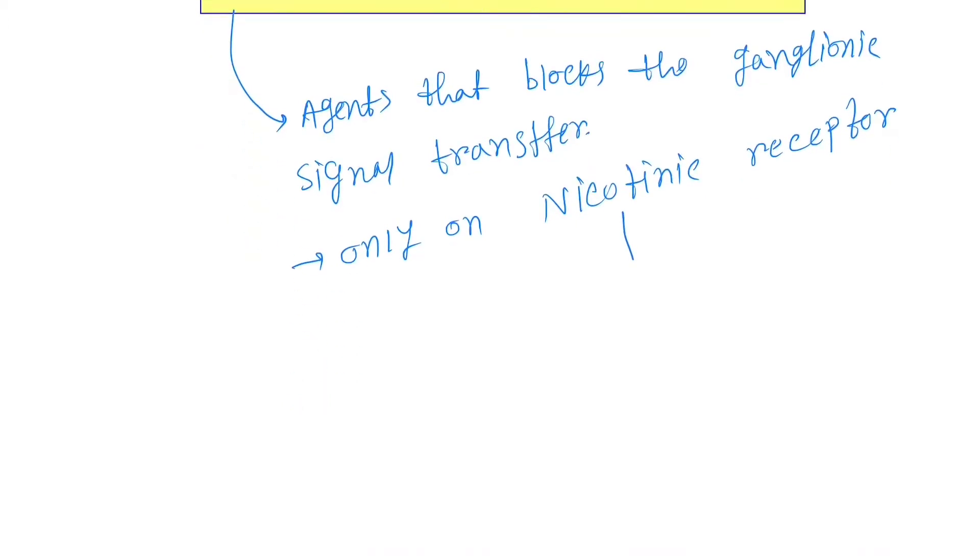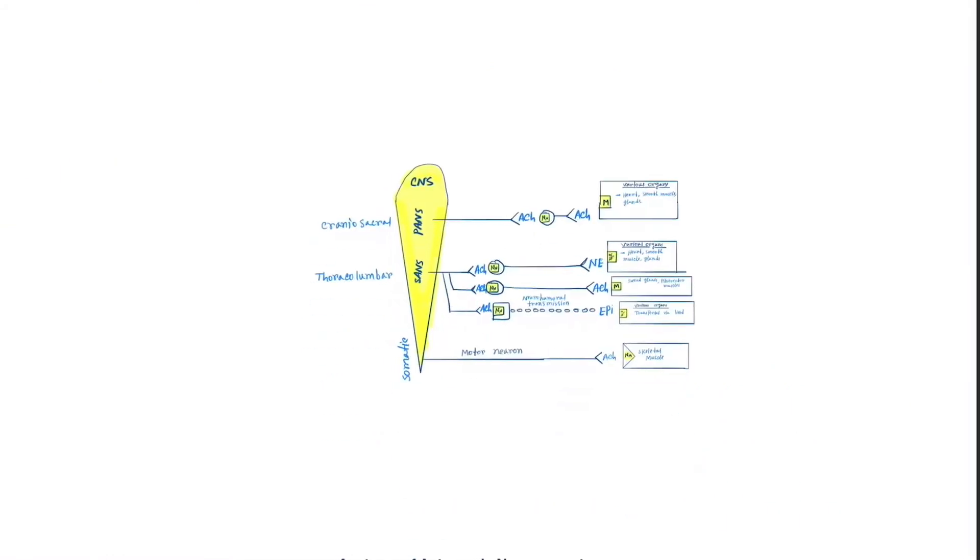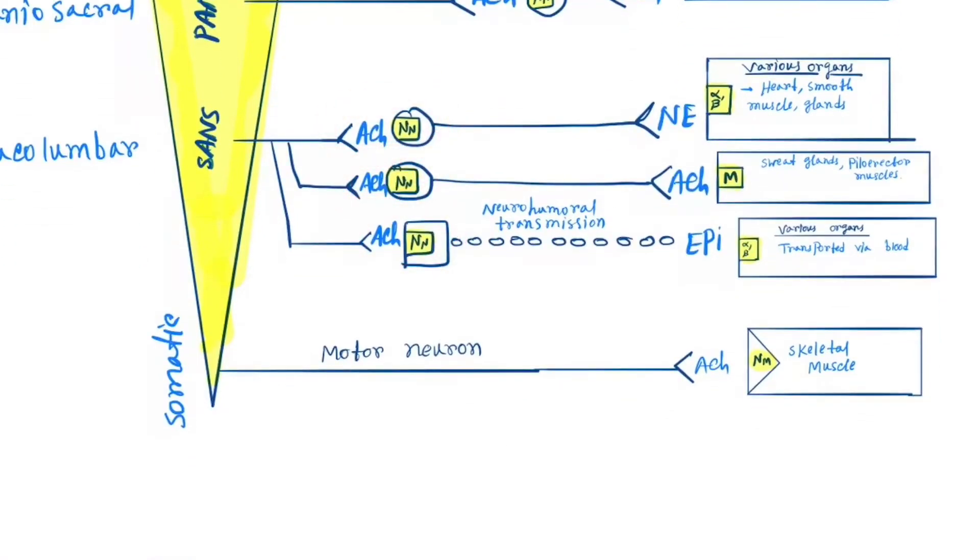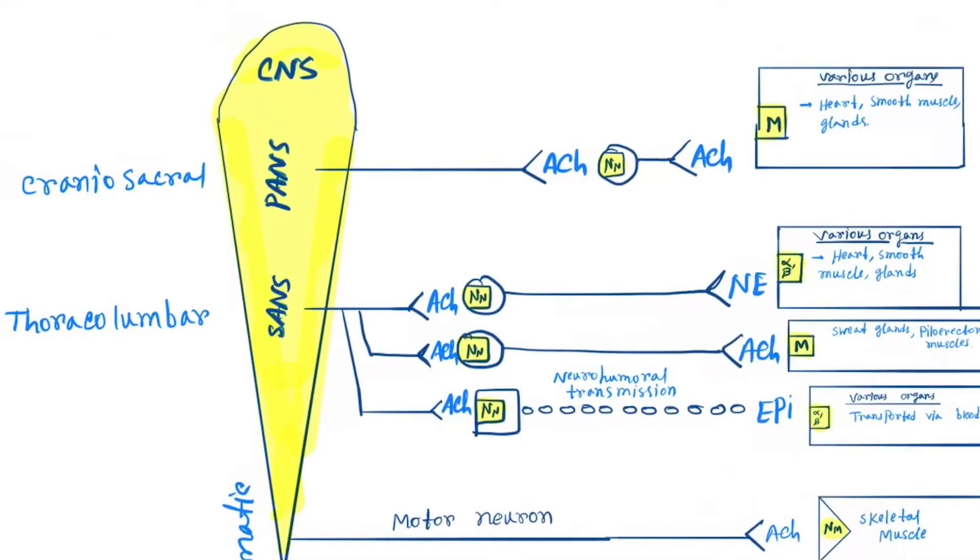Nicotinic receptors are of two types: nerve to nerve (NN) and nerve to muscle (NM). Now see in the diagram - here you can see nerve to nerve connections, and here is nerve to muscle. They act mainly on the sympathetic and parasympathetic nervous systems.